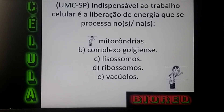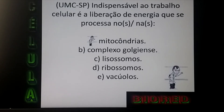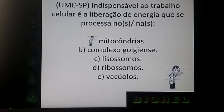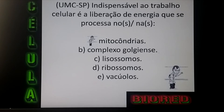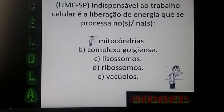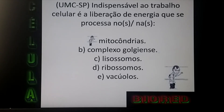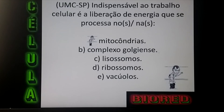Ribossomos, principal função — síntese de proteínas. E os vacúolos? Aparecem nas células vegetais e a principal função deles é armazenar substâncias e o controle hídrico da célula. A gente chama isso de osmorregulação.